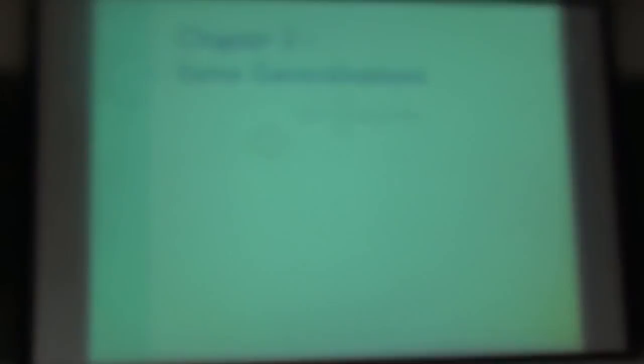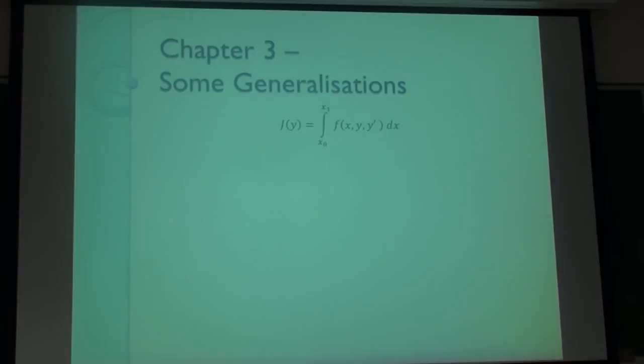We now know that when we have a functional of this form — the integral from x0 to x1 of a function of x, y, and y' dx — we can derive an Euler-Lagrange equation, which I'll be calling an EL equation. This EL equation gives us a necessary but not sufficient condition for y to be an extremal of that functional J.